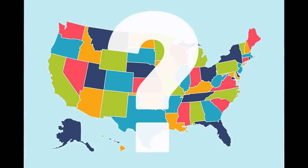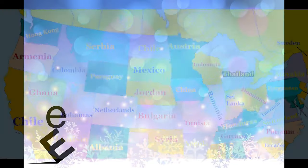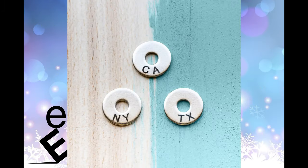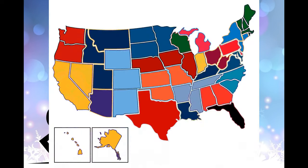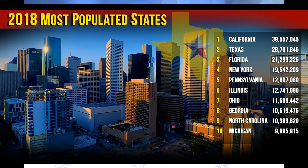States, unlike U.S. territories, possess a number of powers and rights under the United States Constitution. States and their residents are represented in the United States Congress, a bicameral legislature consisting of the Senate and the House of Representatives. Each state is also entitled to select a number of electors to vote in the Electoral College, the body that directly elects the President of the United States. Additionally, each state has the opportunity to ratify constitutional amendments, and, with the consent of Congress, two or more states may enter into interstate compacts with one another. The police power of each state is also recognized.